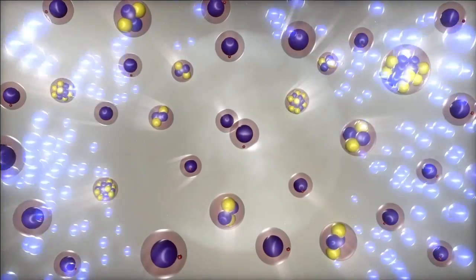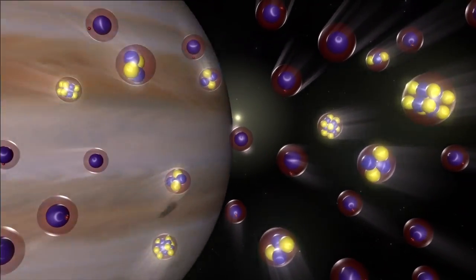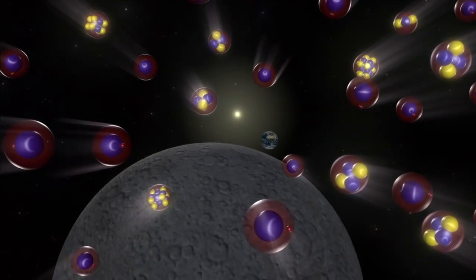The ions are deflected by the magnetic field of the sun, just like the magnetic field of the Earth deflects the solar wind, but the neutral atoms are unaffected and go straight through.